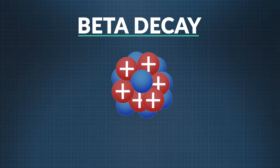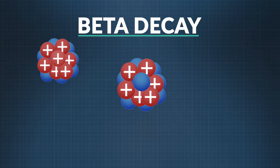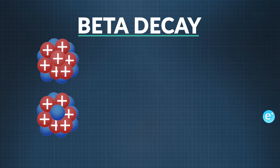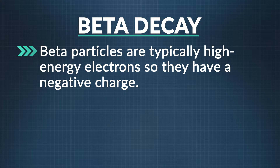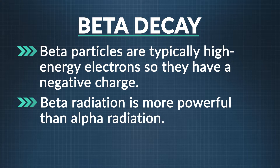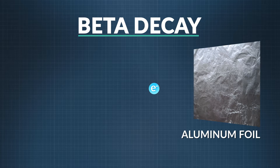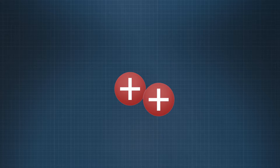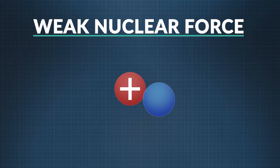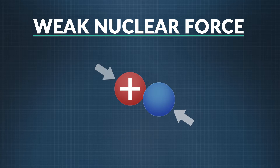Another type of decay is beta decay. Beta decay occurs when a neutron in an atom's nucleus decays into a proton, or when a proton decays into a neutron, and a beta particle is emitted. Beta particles are typically high-energy electrons, so they have a negative charge. Beta radiation is more powerful than alpha radiation, but a beam of beta particles can still be blocked by a thin layer of metal like aluminum foil. There's a fundamental force involved in beta decay called the weak nuclear force, which works inside protons and also keeps individual neutrons intact.